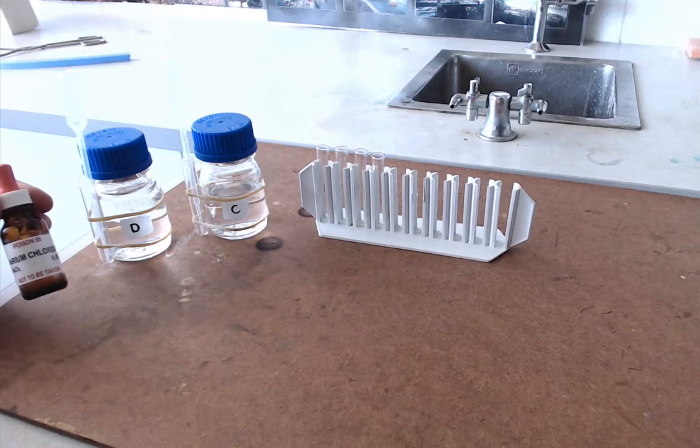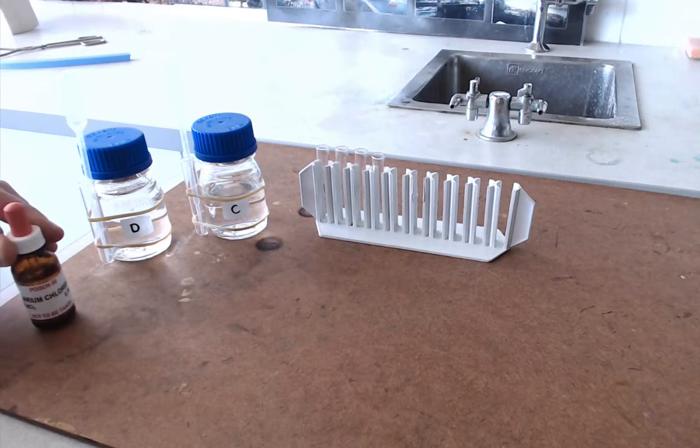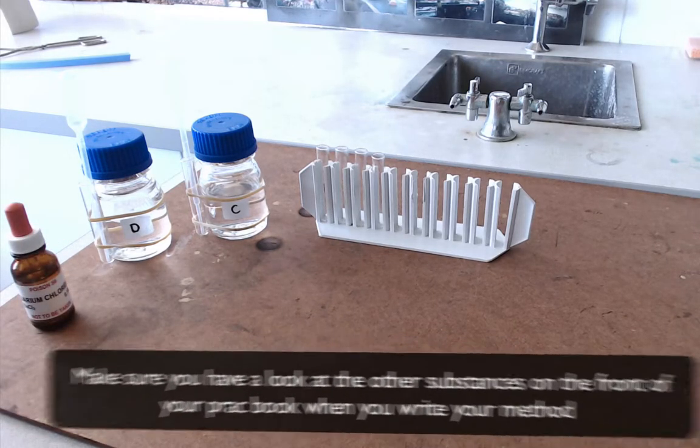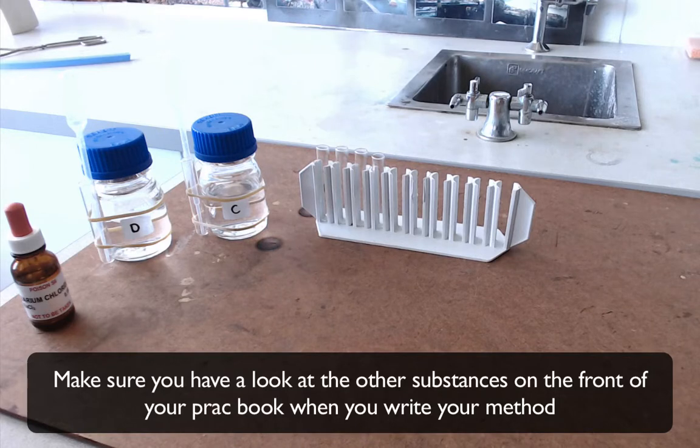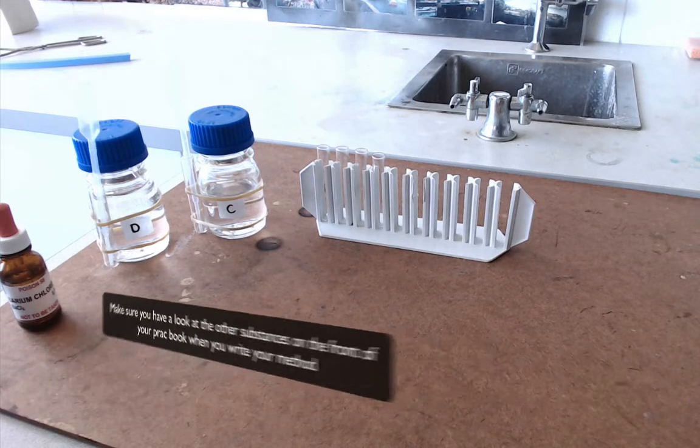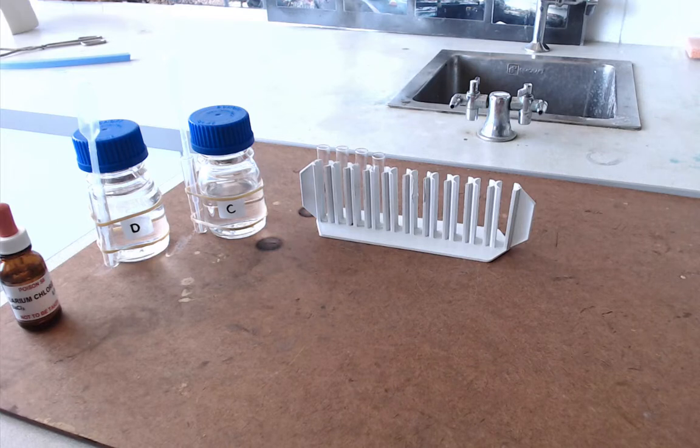C and D actually come with barium chloride, but you can see what the other solutions are when you have a look at your prac book. So as I say, it's a very simple experiment to set up.